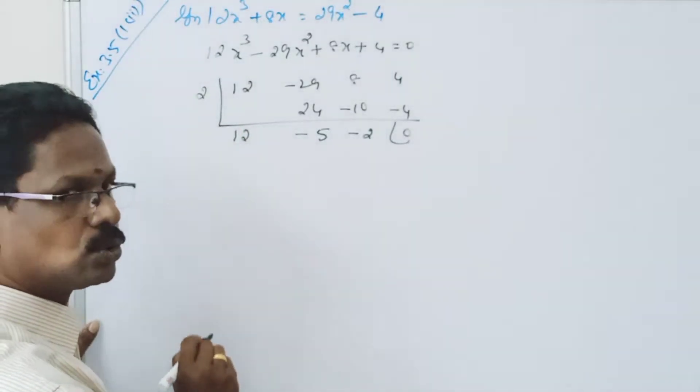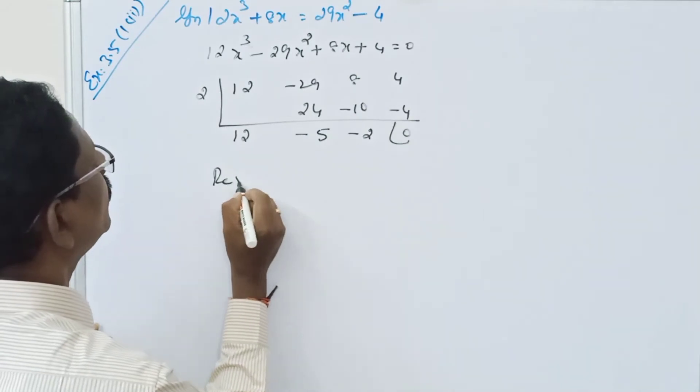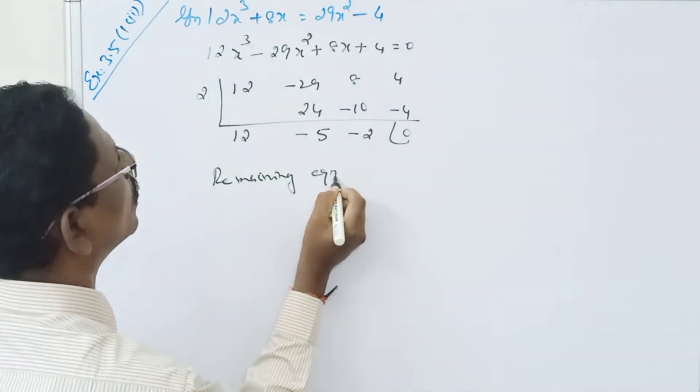So x is equal to 2 is the one root. Then the remaining equation, what we got?